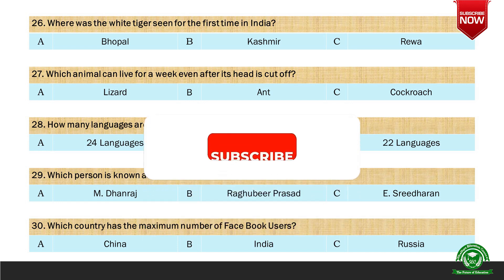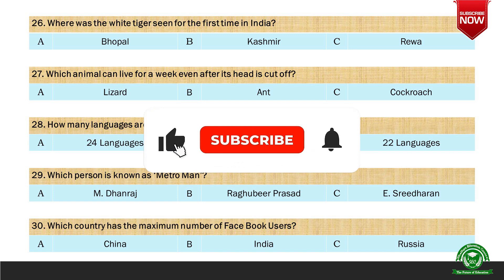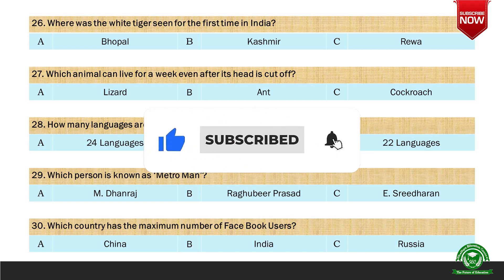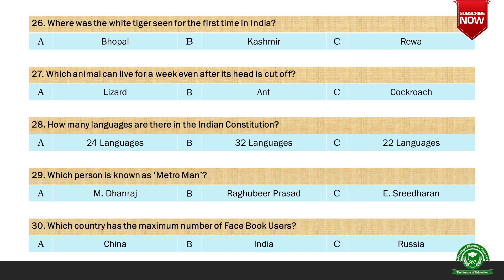Next question: How many languages are there in the Indian constitution? Options are A. 24 languages, B. 32 languages, and C. 22 languages. And the right option is C. 22 languages.